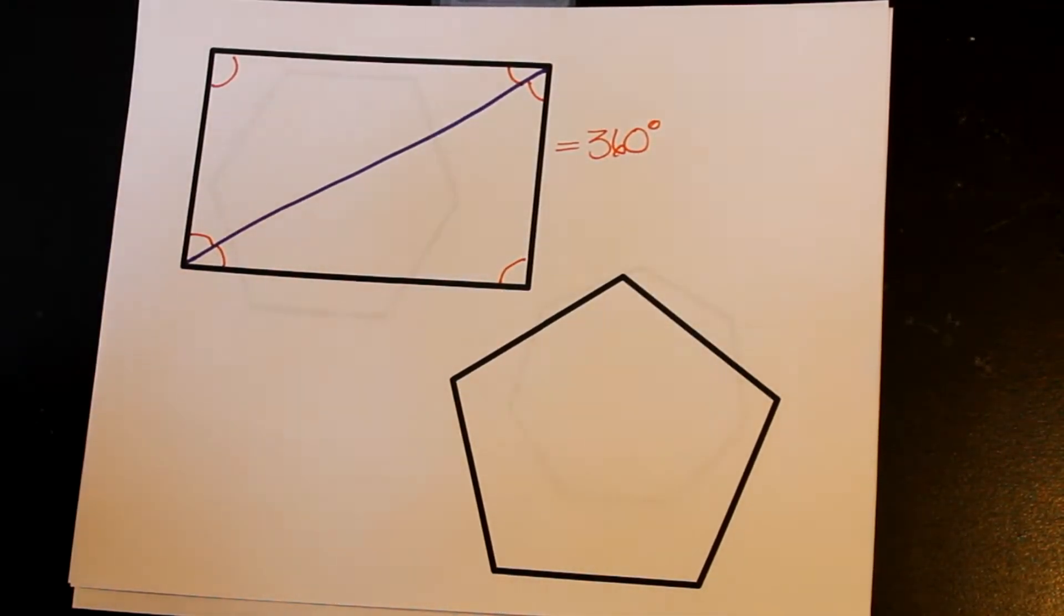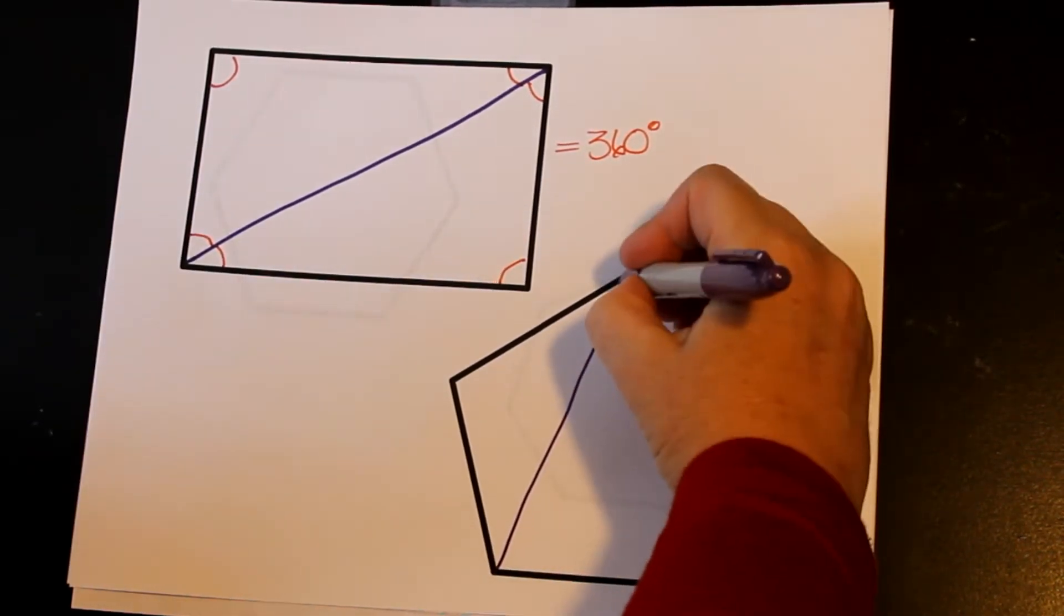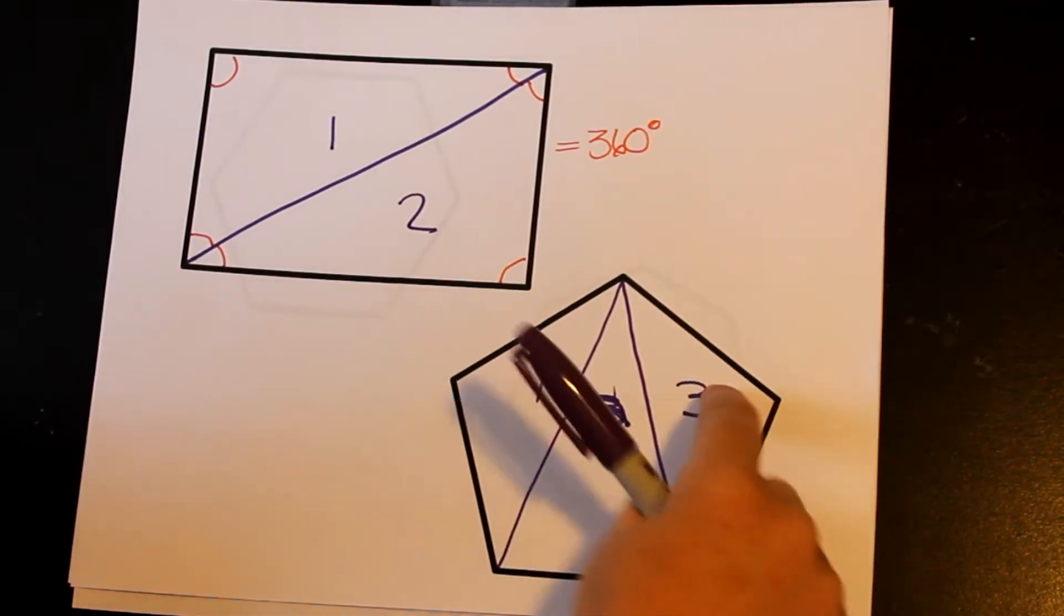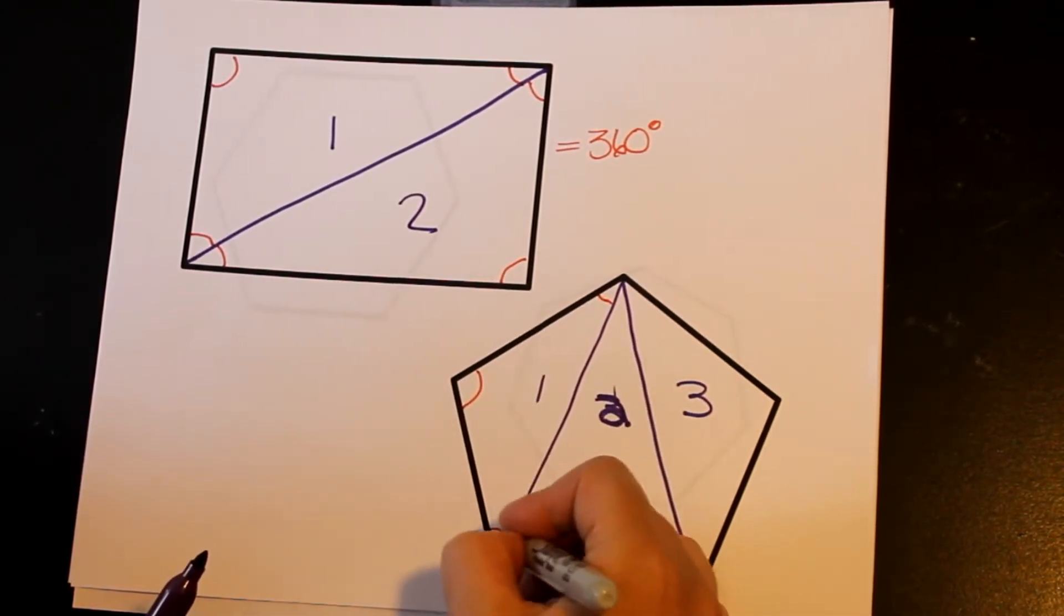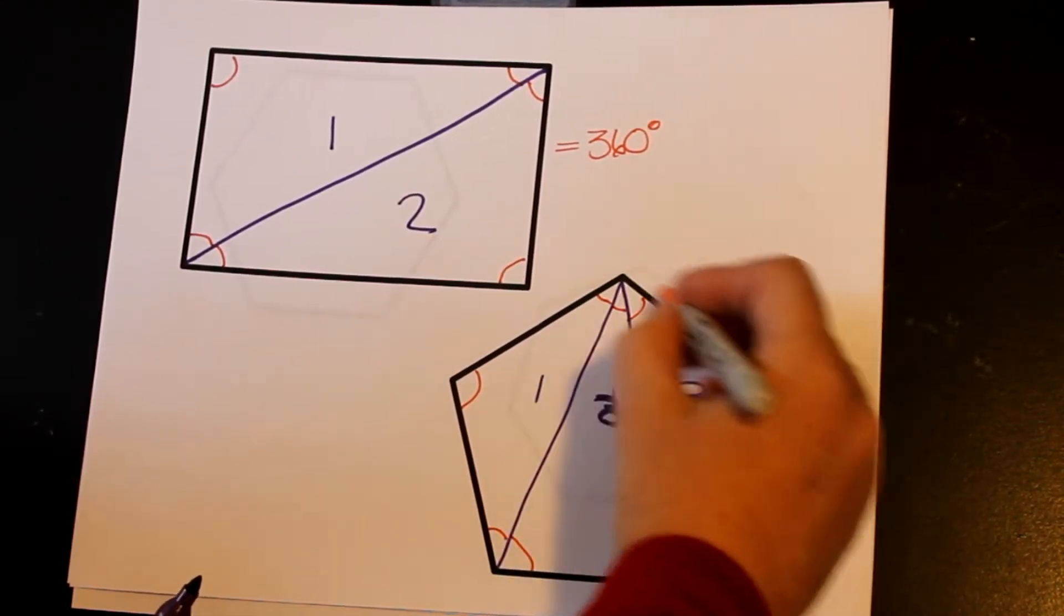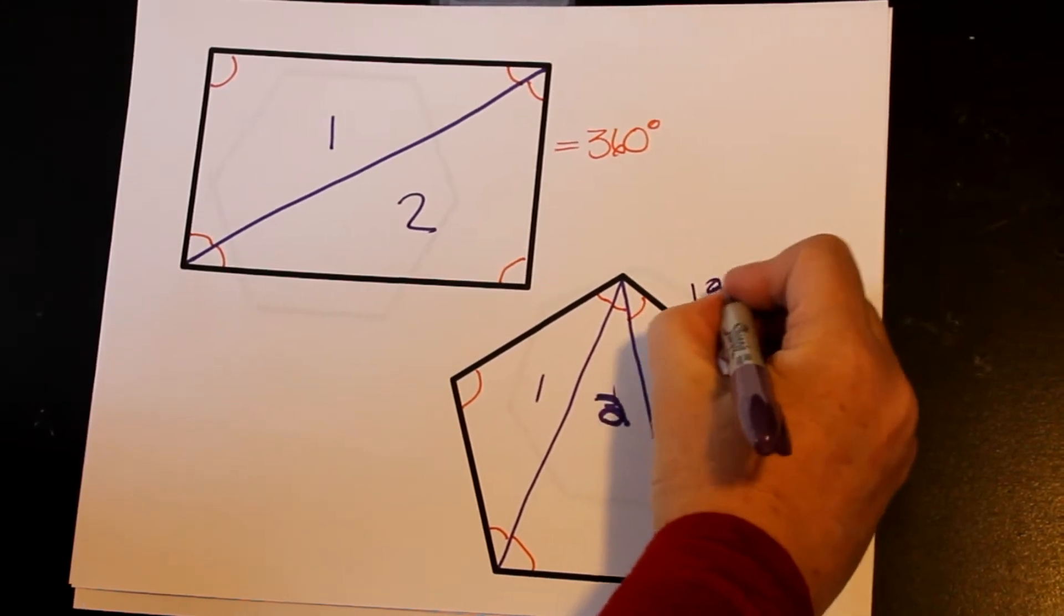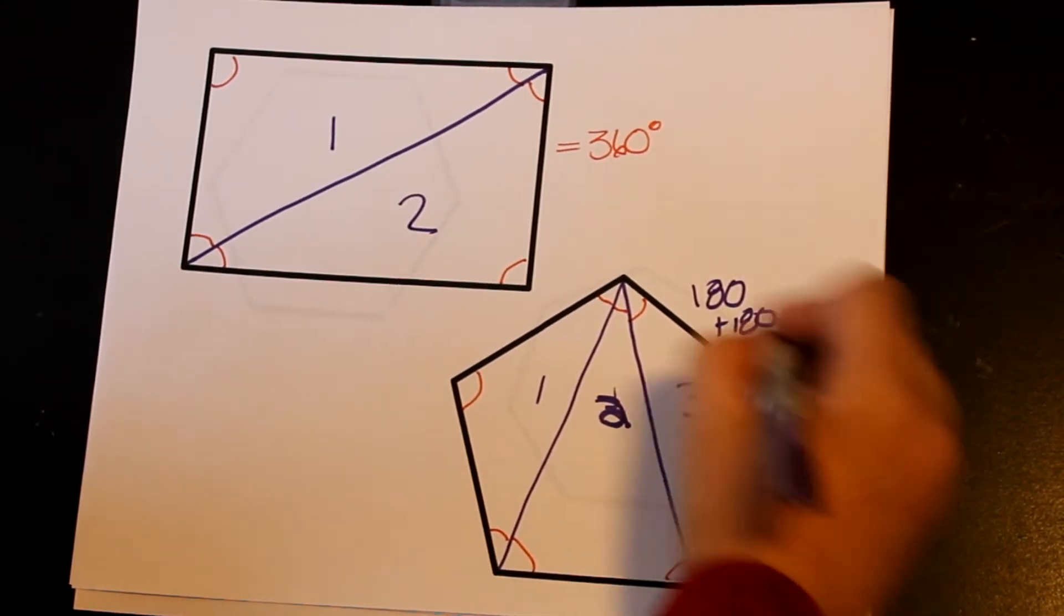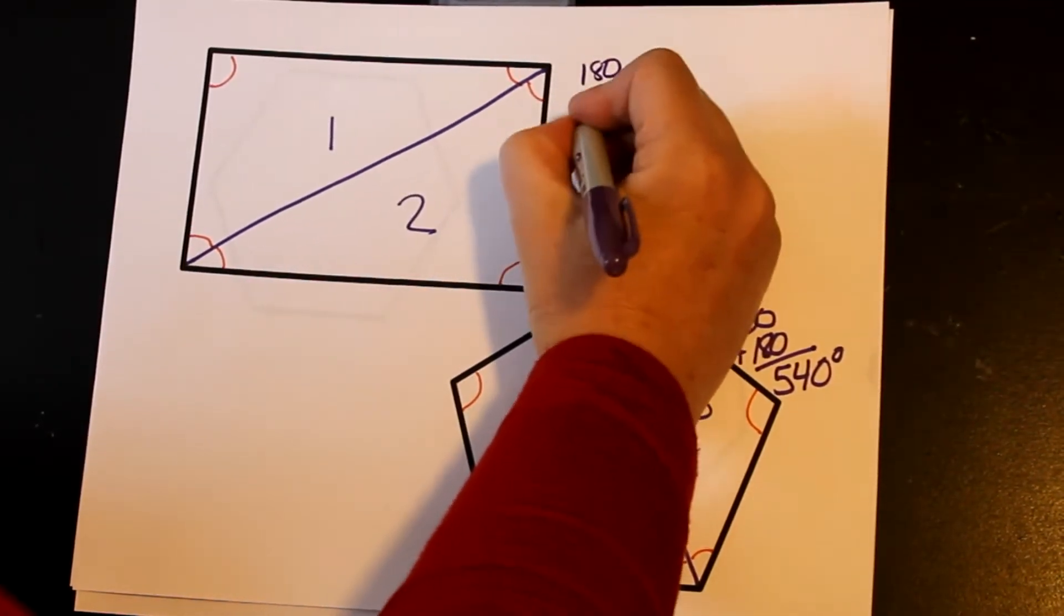If I look at a pentagon, for instance, can I use that same process? Well, if I draw in the diagonals of a pentagon, and there are two of them, instead of getting two triangles like I got on a rectangle, I'll get three triangles on a pentagon. Well, if I still do the same concept of adding up the angles inside, this added up to 180, this one adds up to 180, and this one adds up to 180. So all together, those orange angles get all the angles in a pentagon. So it's 180 three times: 180 plus 180 plus 180. So all together, that's going to be 540 degrees.